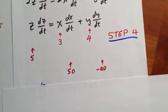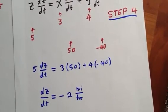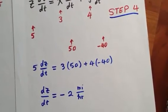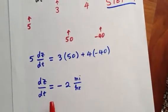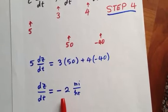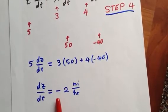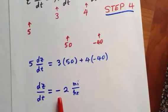Now we solve for dz/dt. We plug in the numbers, simplify, and get minus 2 miles per hour. The negative indicates that in that moment, the distance between the two cars is getting smaller.